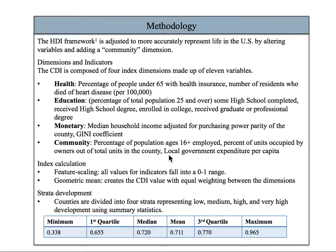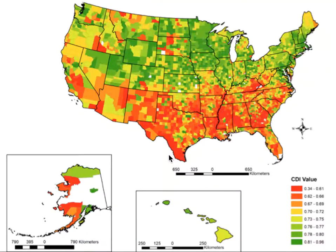Counties were divided into four strata to compare counties into low, medium, high, and very high development. The CDI ranges from 0.33 to 0.96 and averages at 0.75, with 1.0 representing complete development. The values are approximately normally distributed.